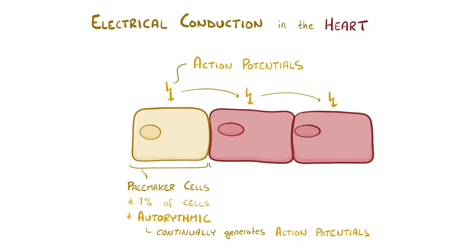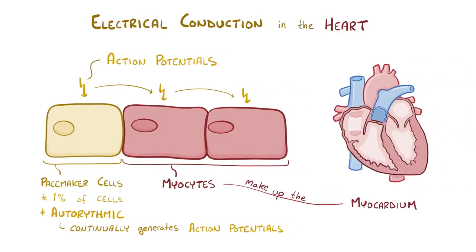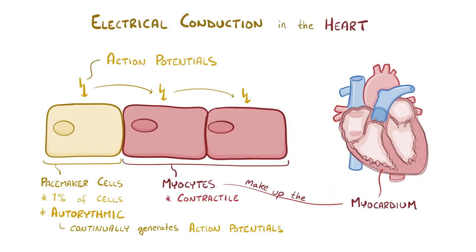The cells that receive the cardiac action potential from the pacemaker cells are called myocytes, and they make up the myocardium, which is the muscular middle layer of the heart. Myocytes are also called contractile cells, because they contract and that's how the heart pumps blood.